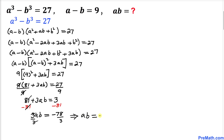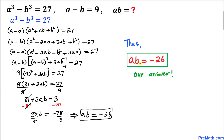Thus our a times b value turns out to be negative 26, and that's our final answer. Thanks for watching and please don't forget to subscribe to my channel for more exciting videos.